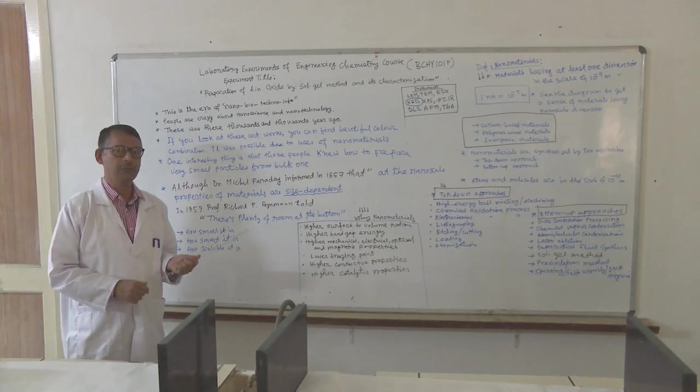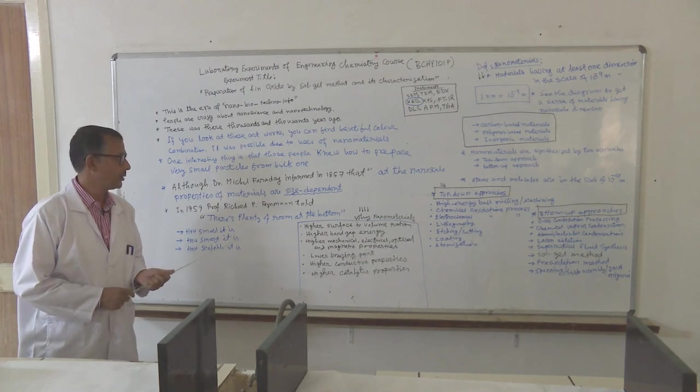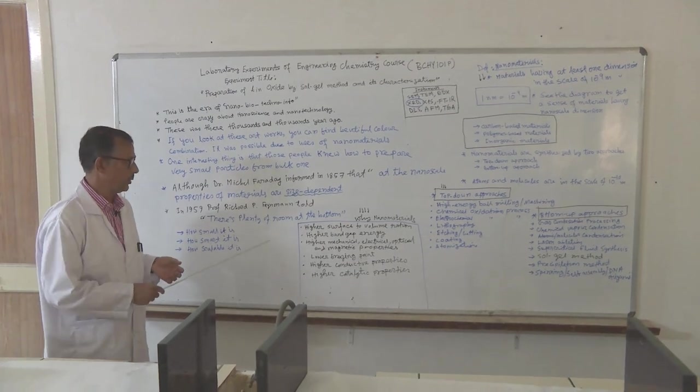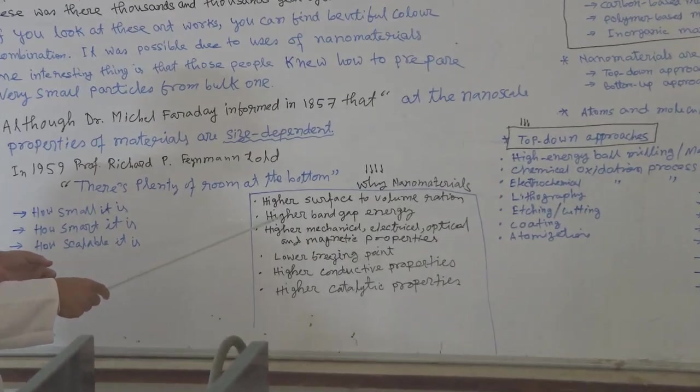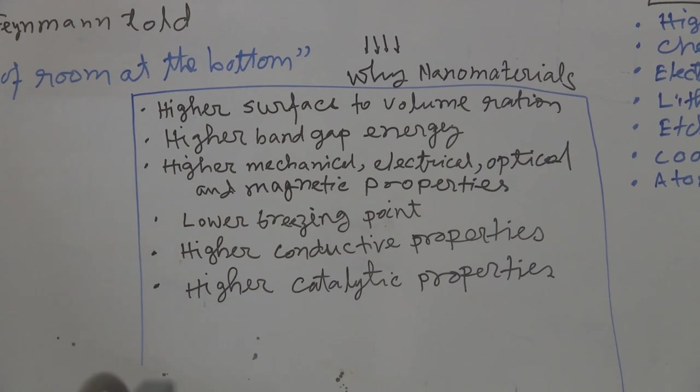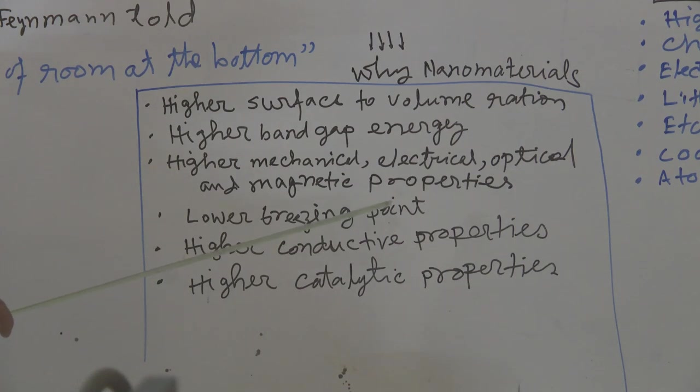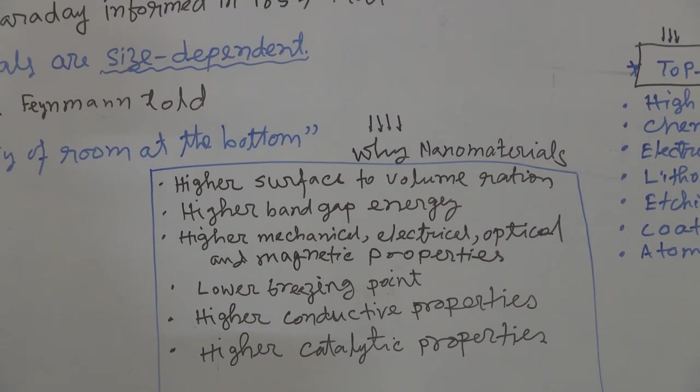So when you are preparing nanomaterials or you are reducing size of the materials, we can get different types of improvement in their properties, like higher surface to volume ratio, higher band gap energy, higher mechanical, electrical, optical and magnetic properties, lower freezing point, higher conduction properties, higher catalytic properties. Due to this different type of improvement in properties, we are crazy about nanomaterials.